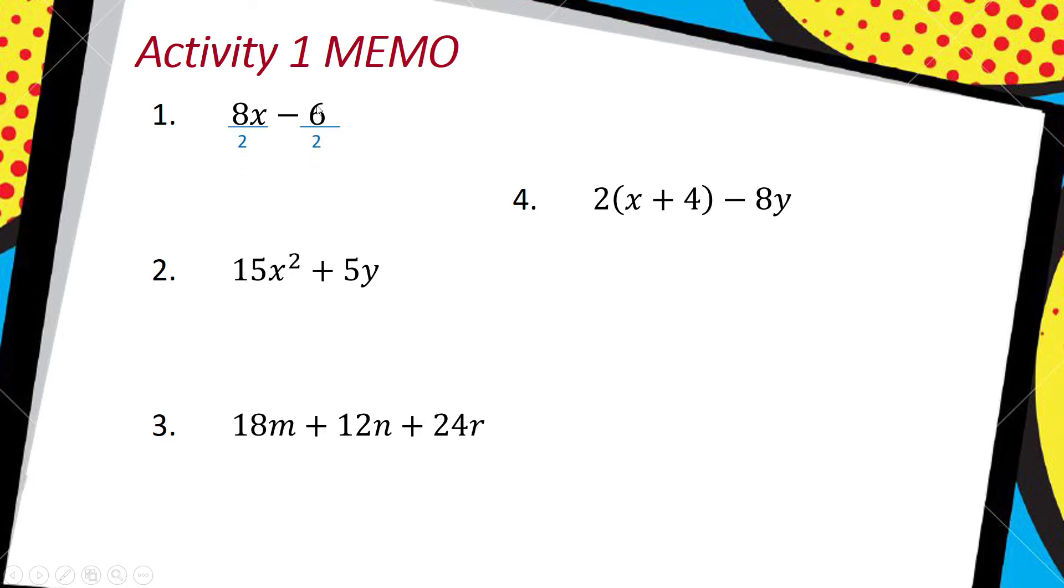Remember, with factorization, you need to write your highest common factor in your answer. So you're going to write equals 2, open bracket, and then what's left. So 8 divided by 2 will give me 4x, minus 6 over 2 which is 3. That's 4x minus 3.